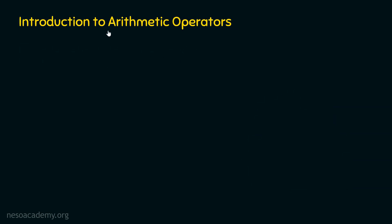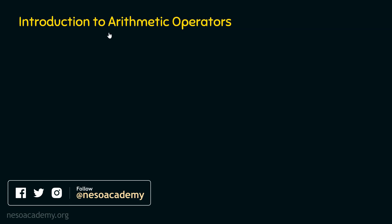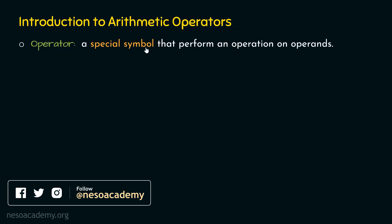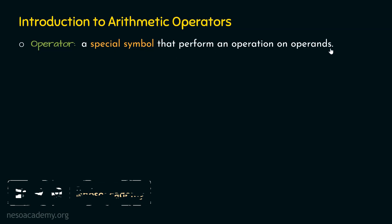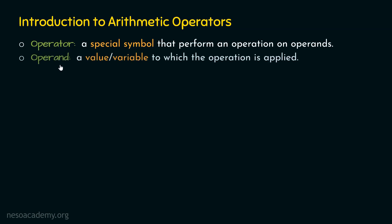First, we will understand what is an operator and what is an operand. An operator is a special symbol that performs an operation on operands. An operand is a value or a variable to which the operation is applied.